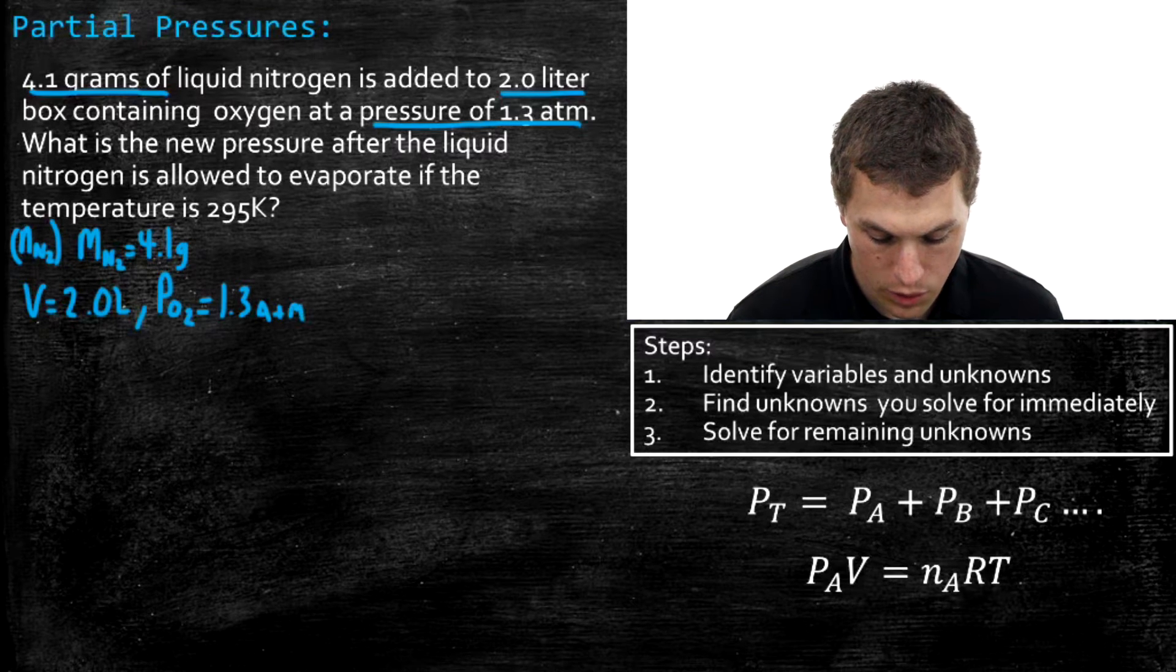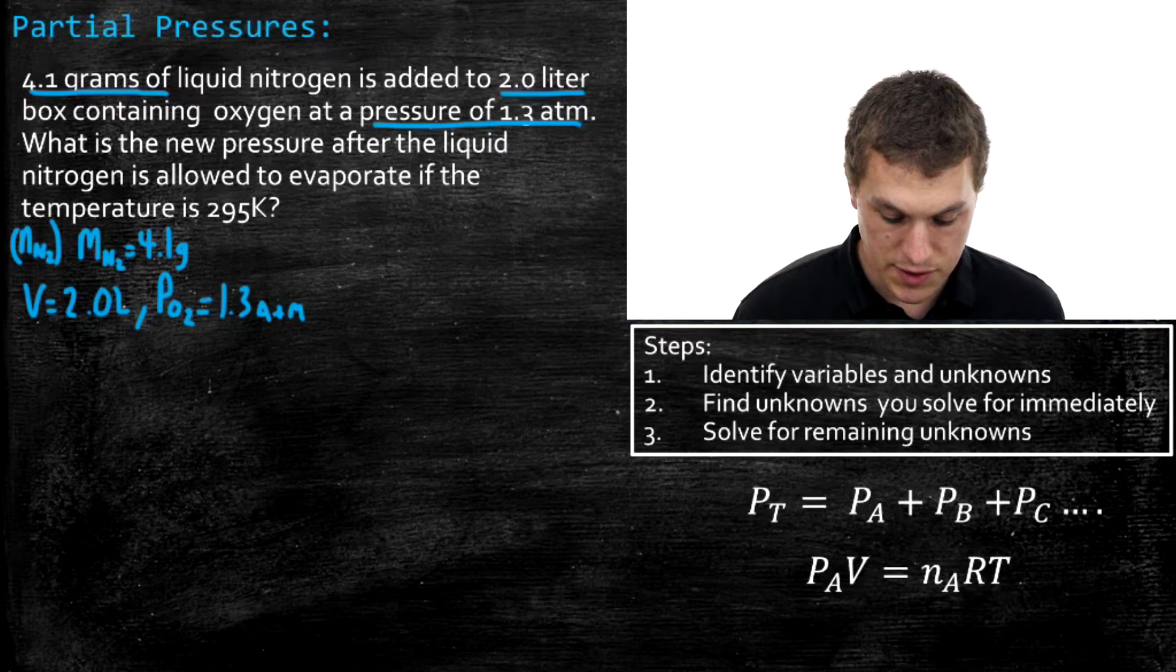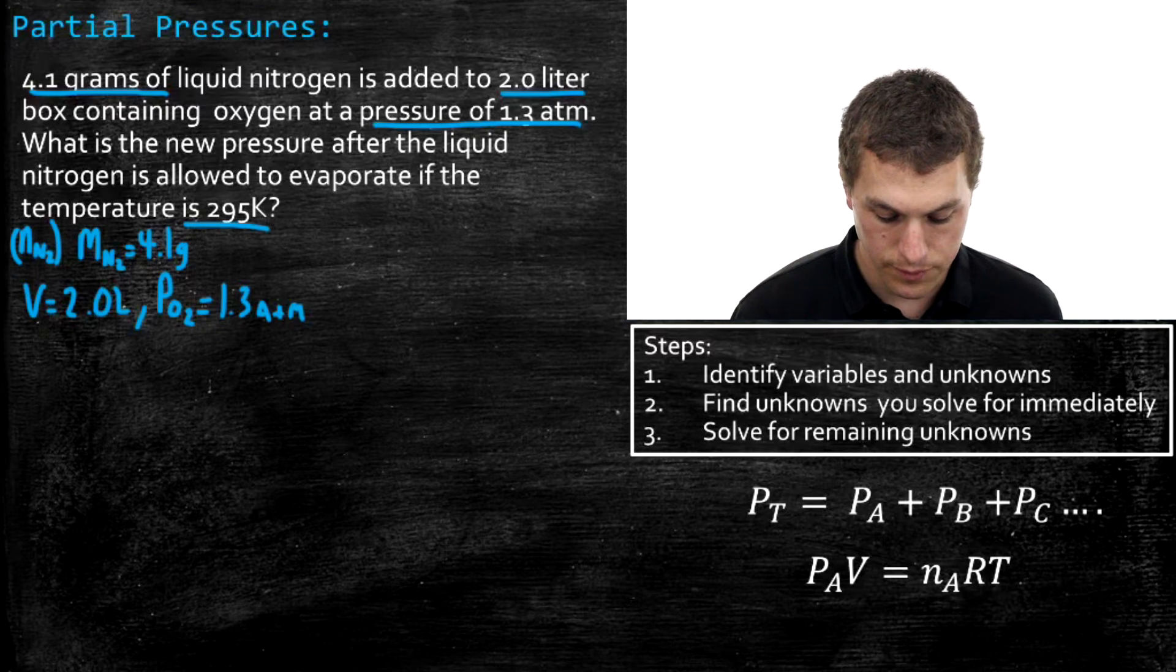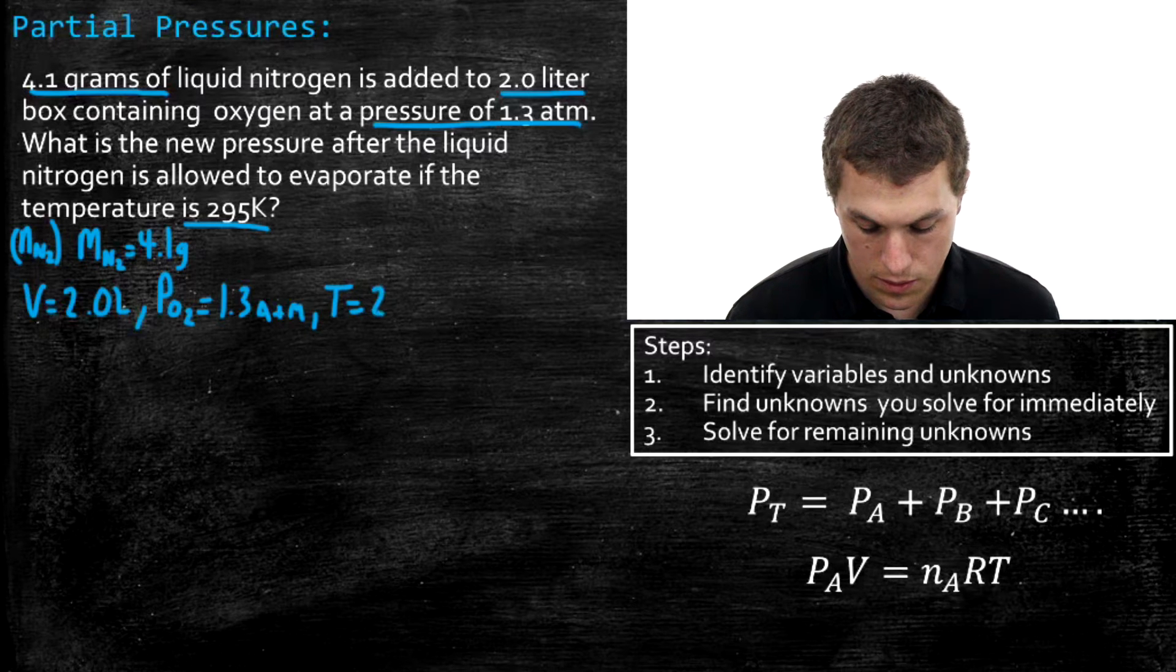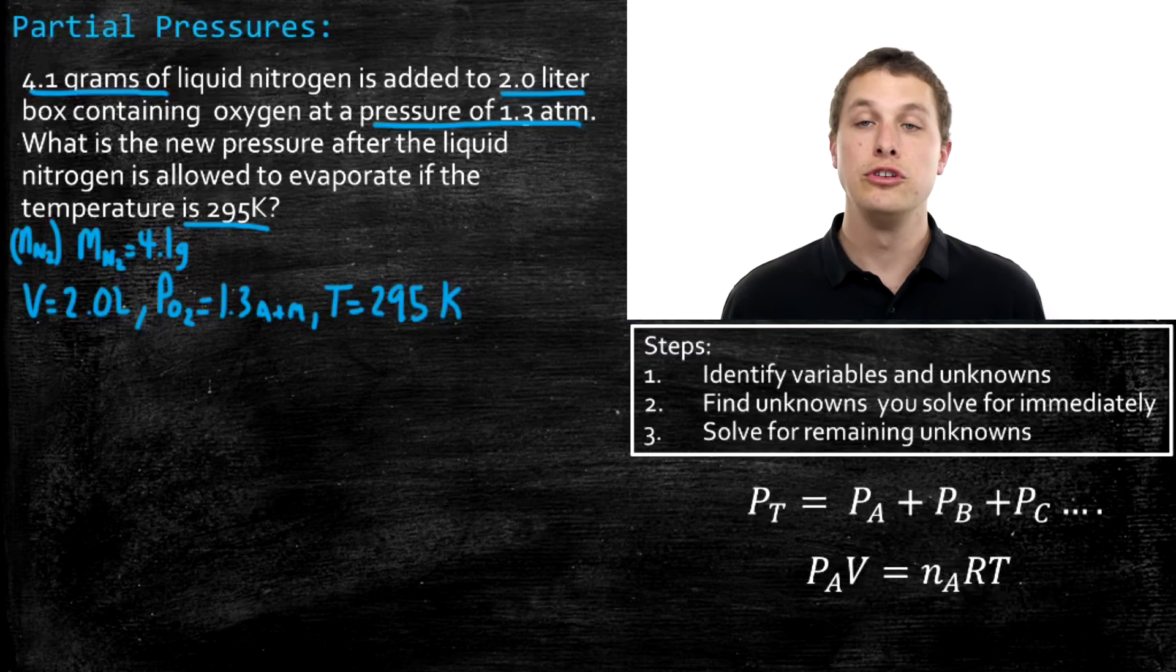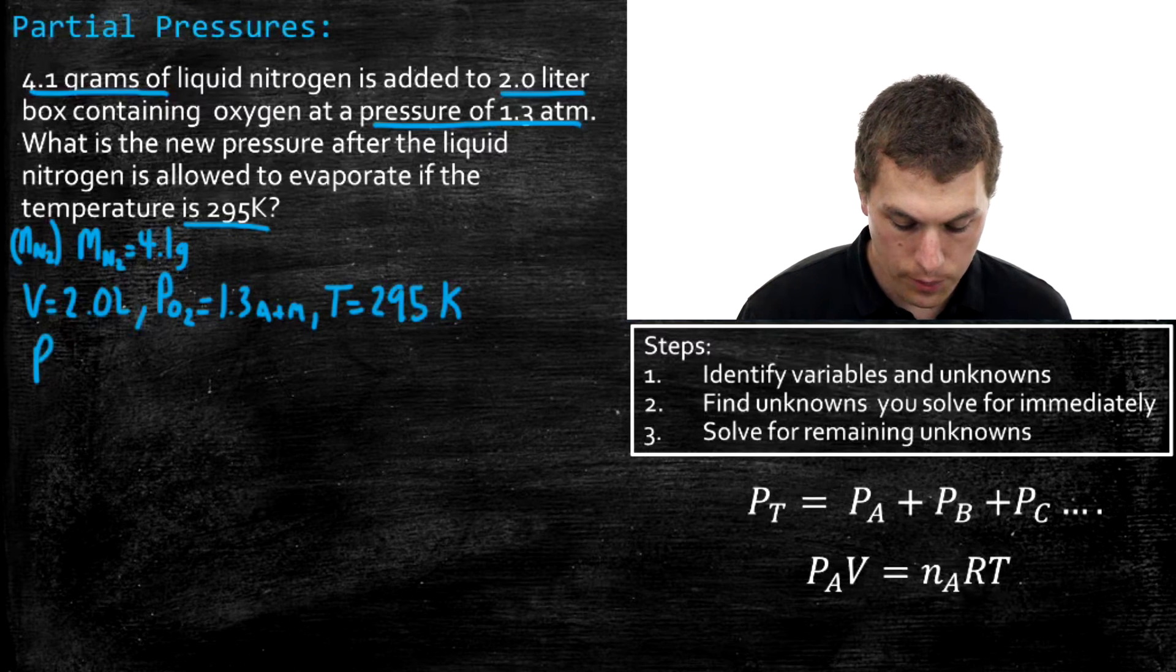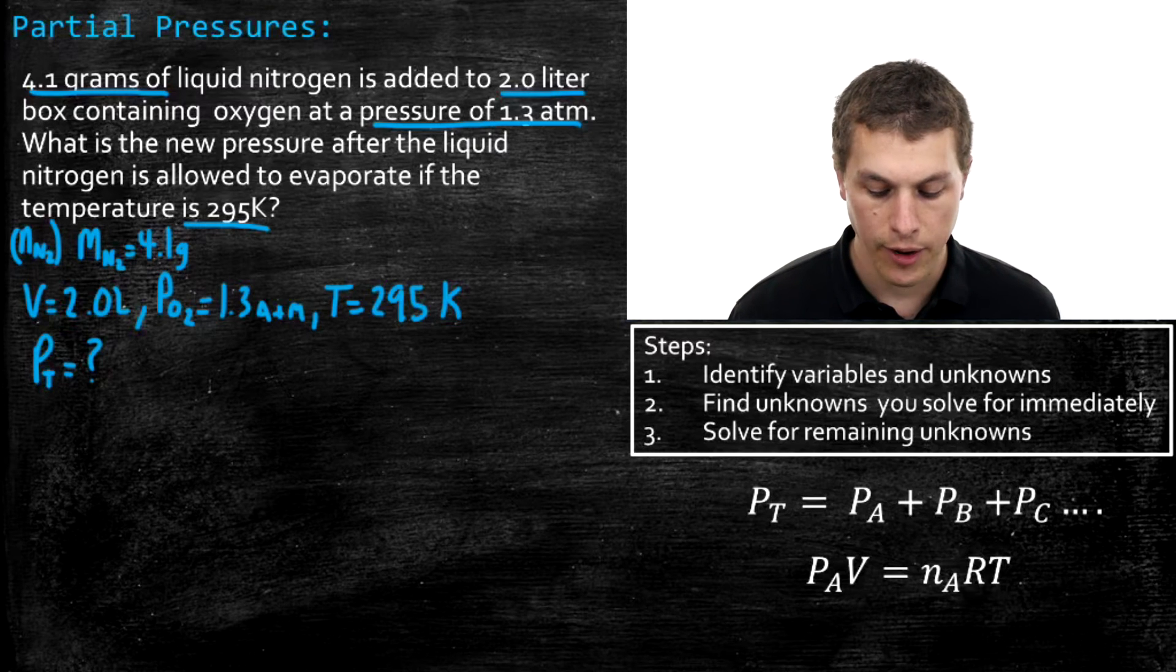Now, what else does it give us? It also tells us the temperature. It tells us that the temperature is 295 Kelvin. And what is it asking for? Well, it wants to know the new total pressure, or PT. So it's looking for the pressure total. That's what we're trying to find out.